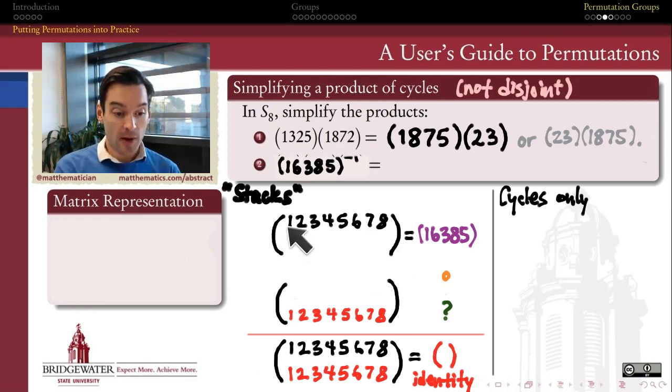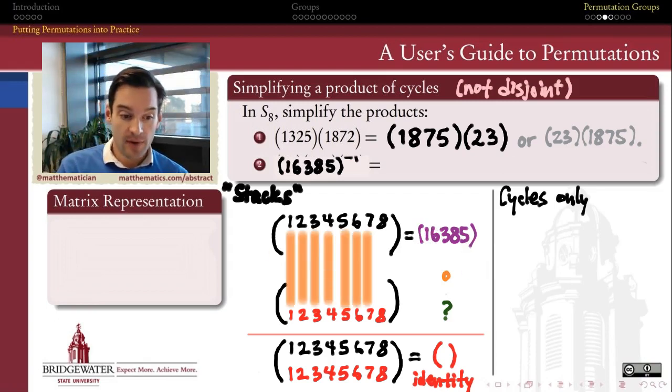So if I ultimately want nothing to change when I compose these two permutations, I have to figure out how to undo whatever this permutation does. So when I feed the output of the first one into the input of the second one, the second one needs to undo the first.